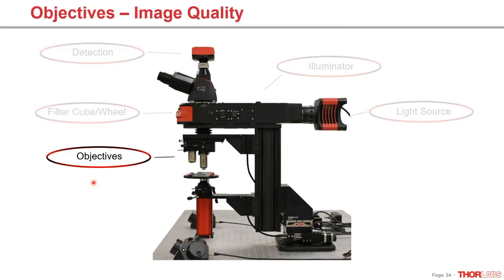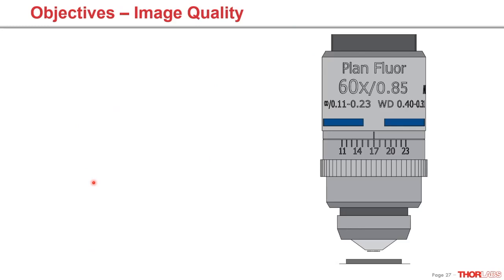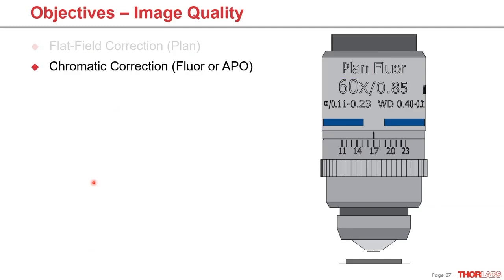Objectives are one of the most critical elements related to image quality, which has a lot to do with aberration. When selecting an objective, look at aberration corrections. 'Plan' marked on the objective means it has flat field correction — it's aberration-free across the field of view, so you won't have distortion at the edge. Next is chromatic correction, termed 'Fluor' or 'Apochromat'. When multiple colors are involved, you want them optically and physically lined up so you don't have chromatic aberration — meaning no lateral or axial shift between colors even though they travel slightly different light paths.